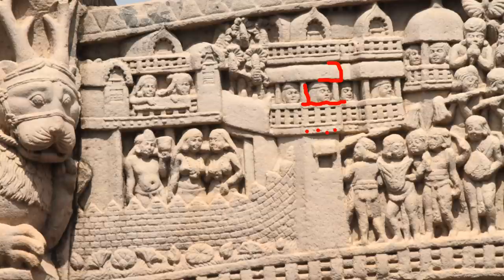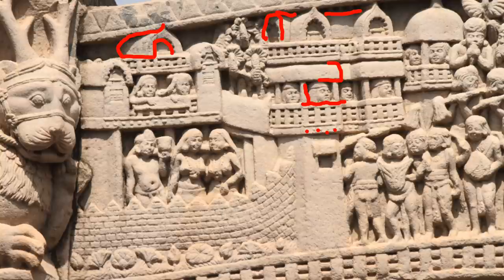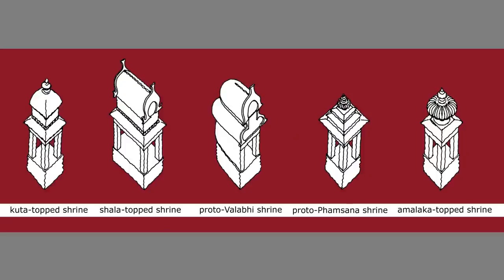Over on the left, an apsidal, round-ended pavilion. On top of the roof terrace, in the middle, a wagon or barrel-roofed building with horseshoe gables on the ends and on the projecting dormers at the side. On the right, a kuta or pavilion crowning a turret, in this case with a dome-like roof that is octagonal. These bind to create further forms.